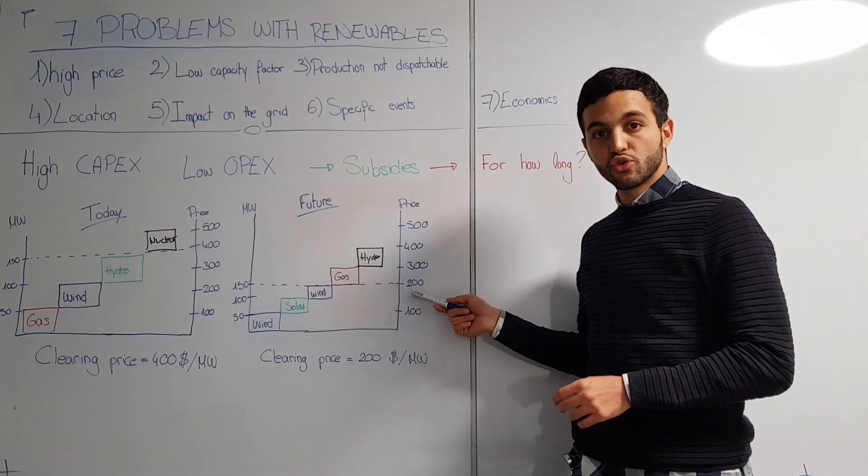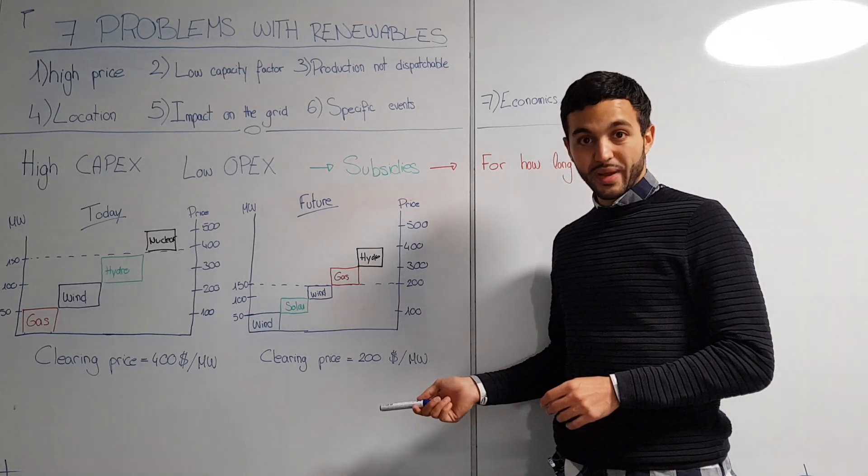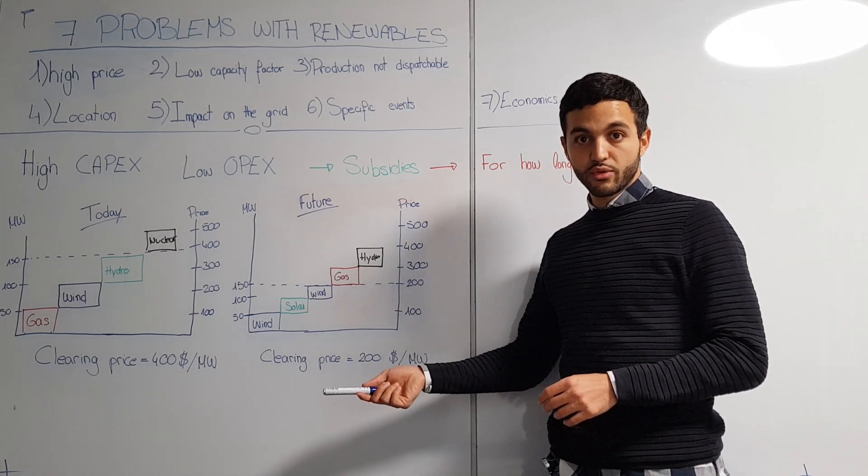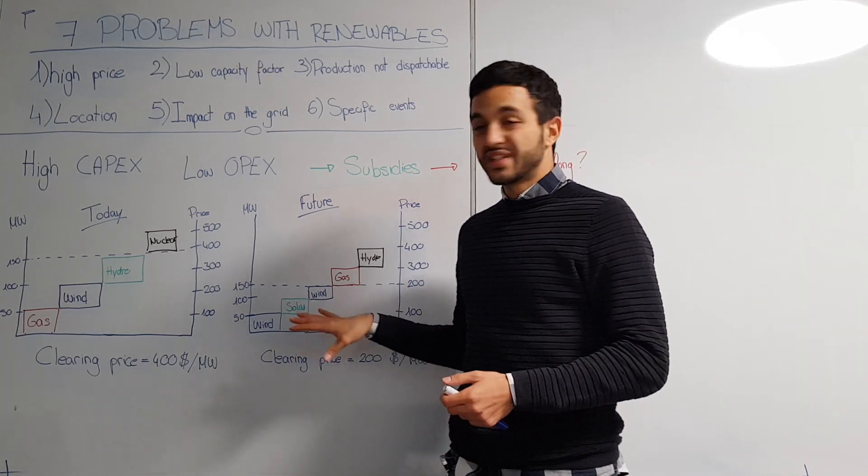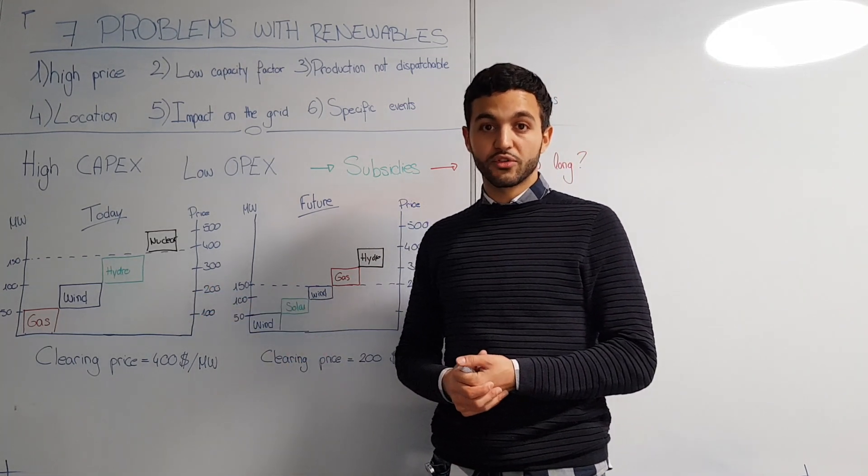So the OPEX is quite low, and again for reaching the same capacity of 150 megawatts, the clearing price will be much lower, so people will be paid less for providing capacity to the market. Consumers will be the winners, but this is not a good situation for power utilities.